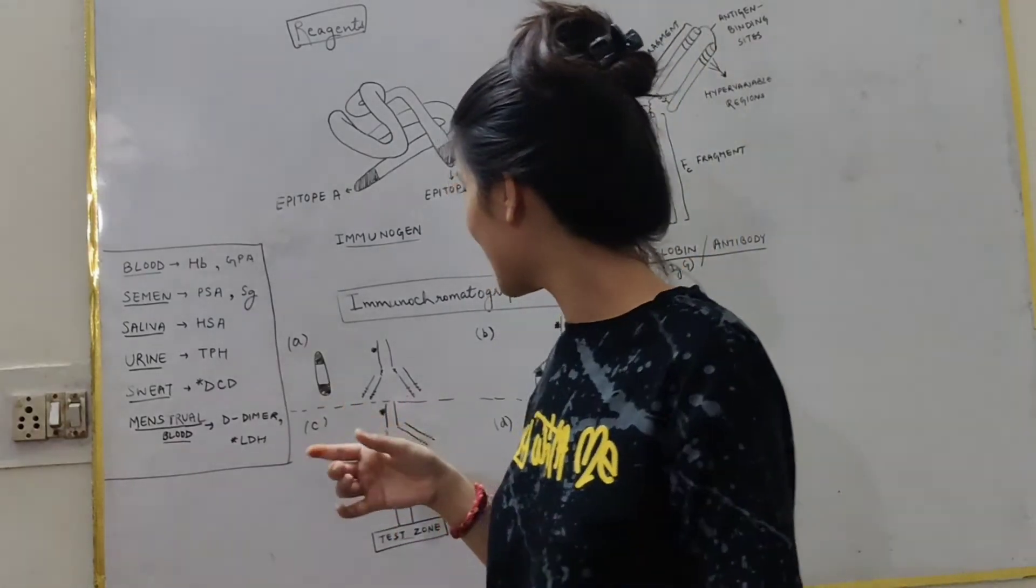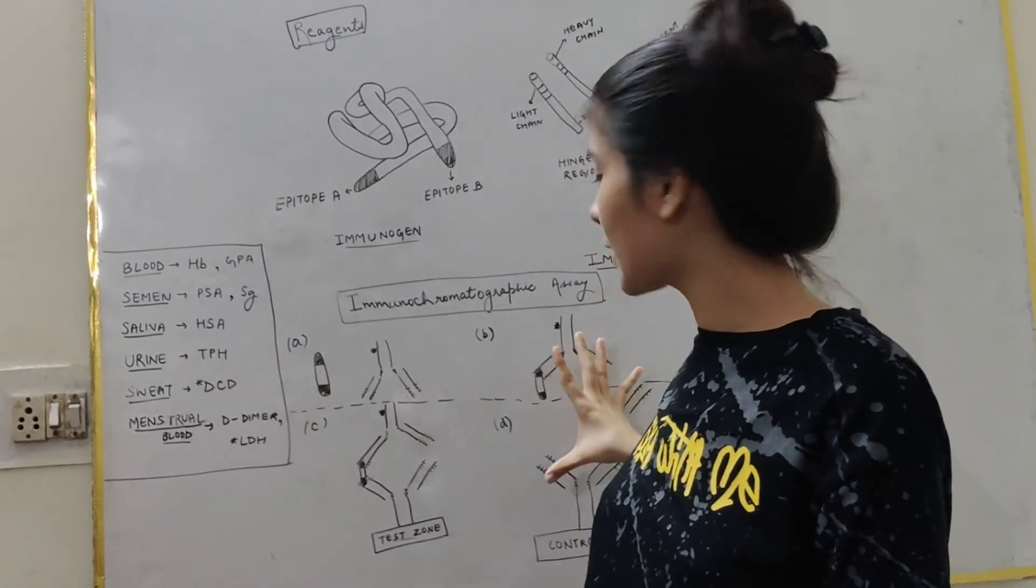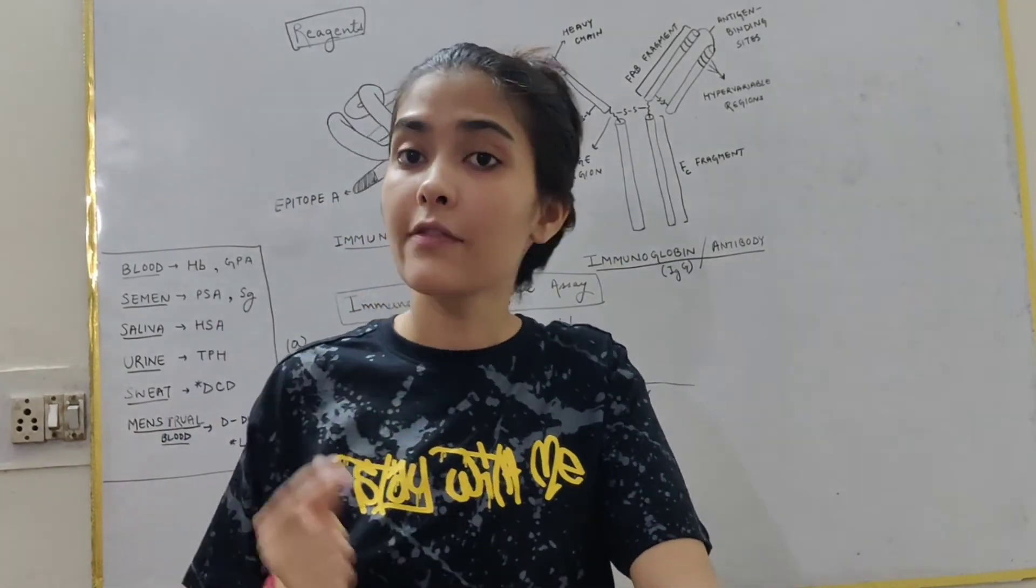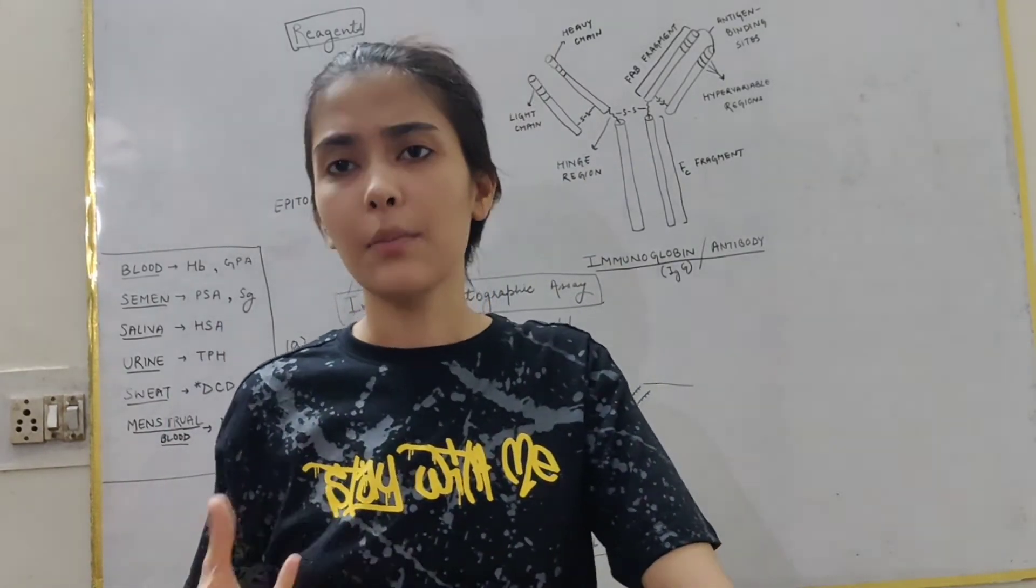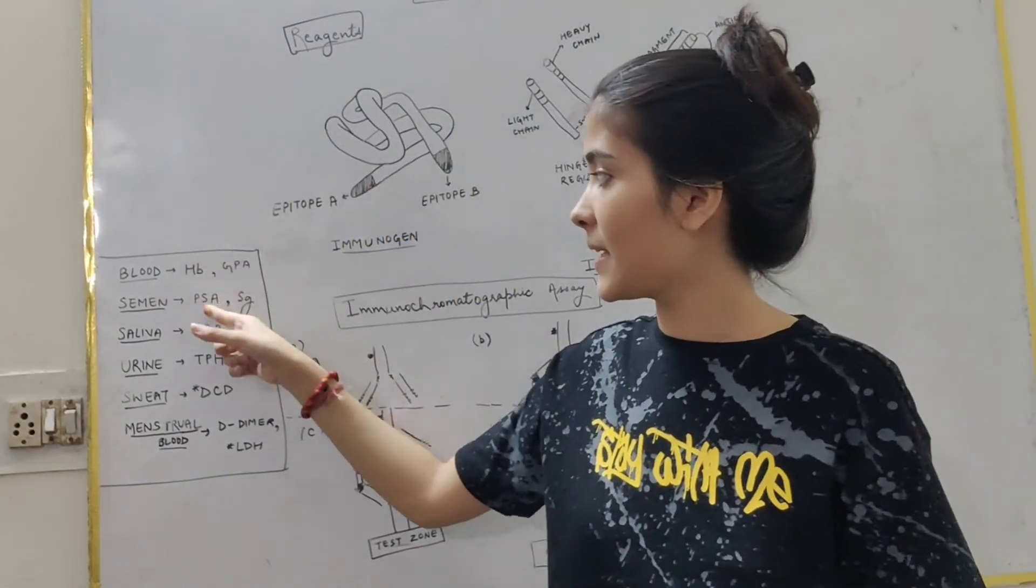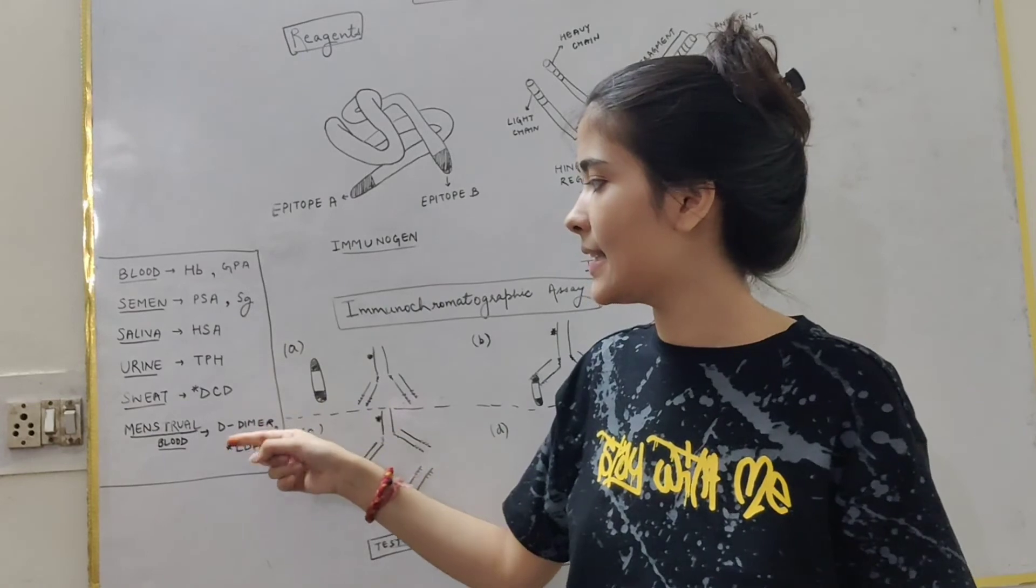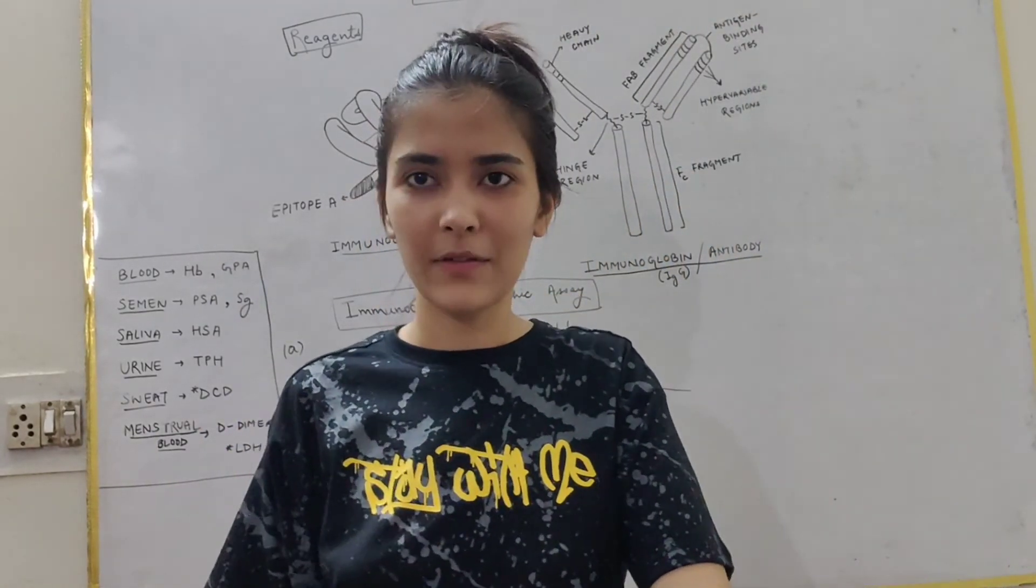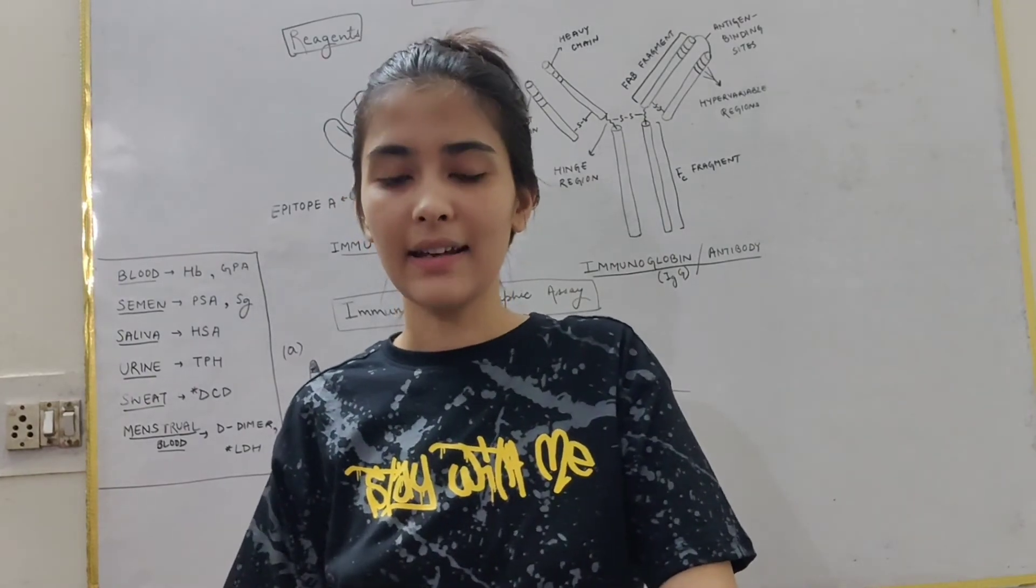So to give you this whole process of immunochromatographic assay, we can instantly, sensitively and specifically detect the presence of any body fluid by the antigens which can be HB, PSA, HSA, TPH, DDC, D-dimer respectively. So this is all for my video. Thank you. I hope you enjoyed it.